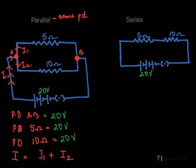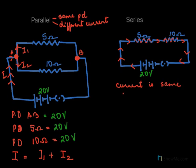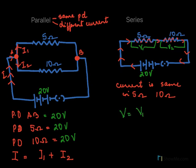In the series connection, the same current flows through both the 5 ohm and 10 ohm resistors. However, the voltage is not the same — if V1 is the voltage across 5 ohms and V2 is the voltage across 10 ohms, then the total voltage V equals V1 plus V2. So in series, the voltage across each resistor differs but the same current flows through all.